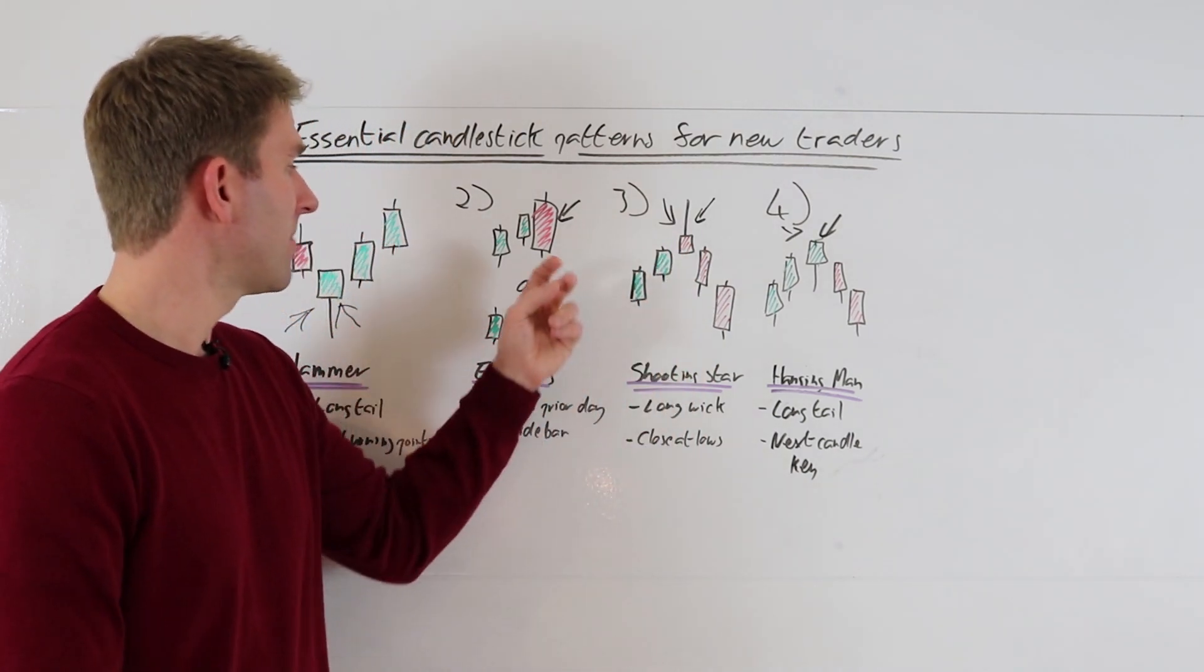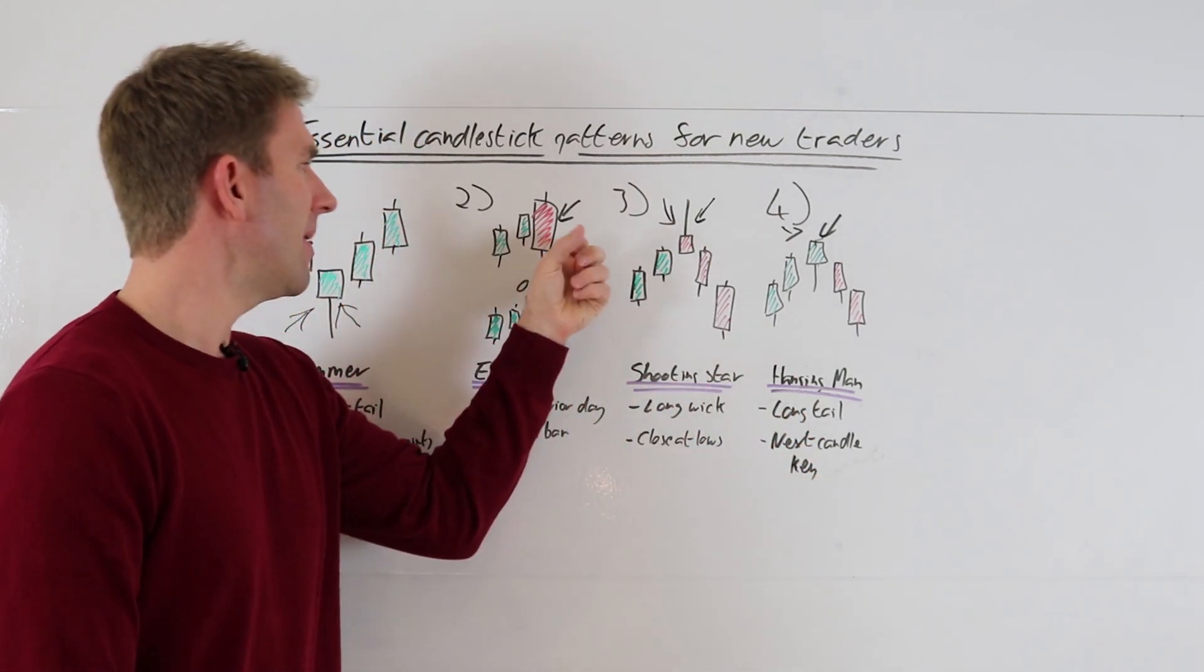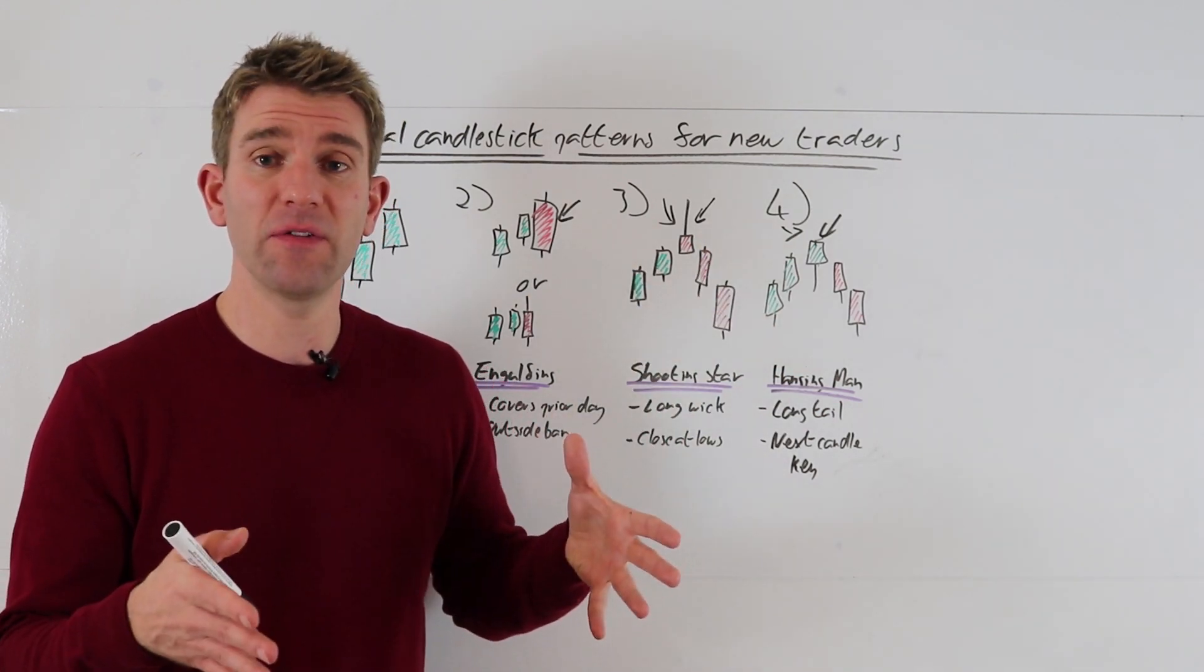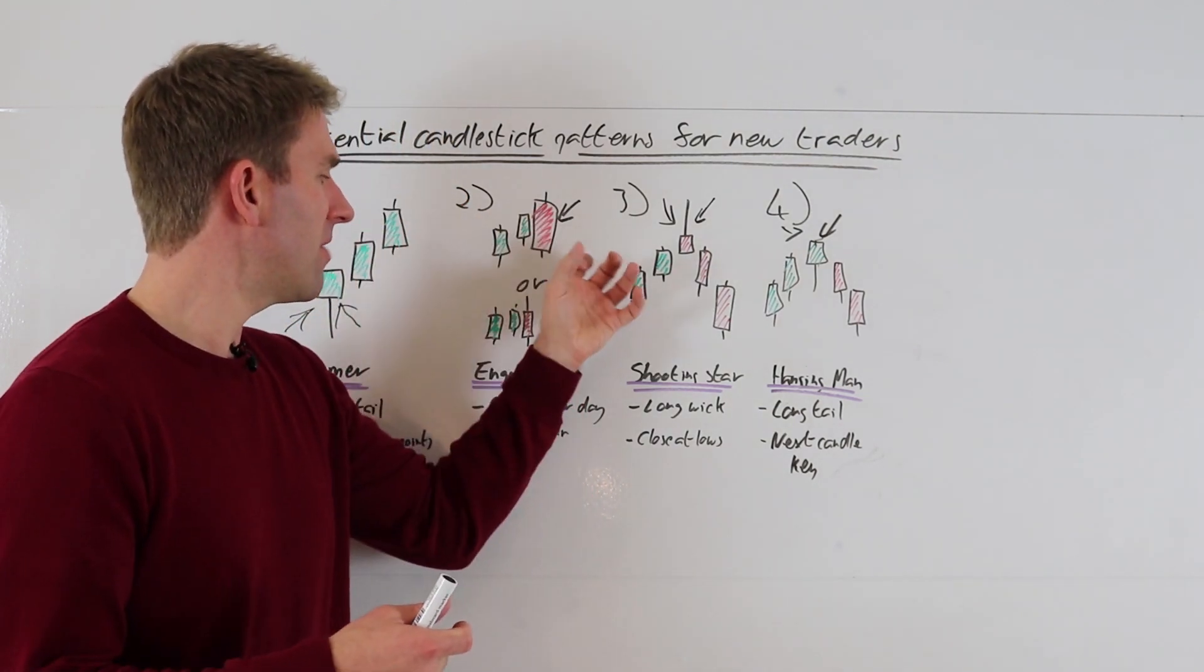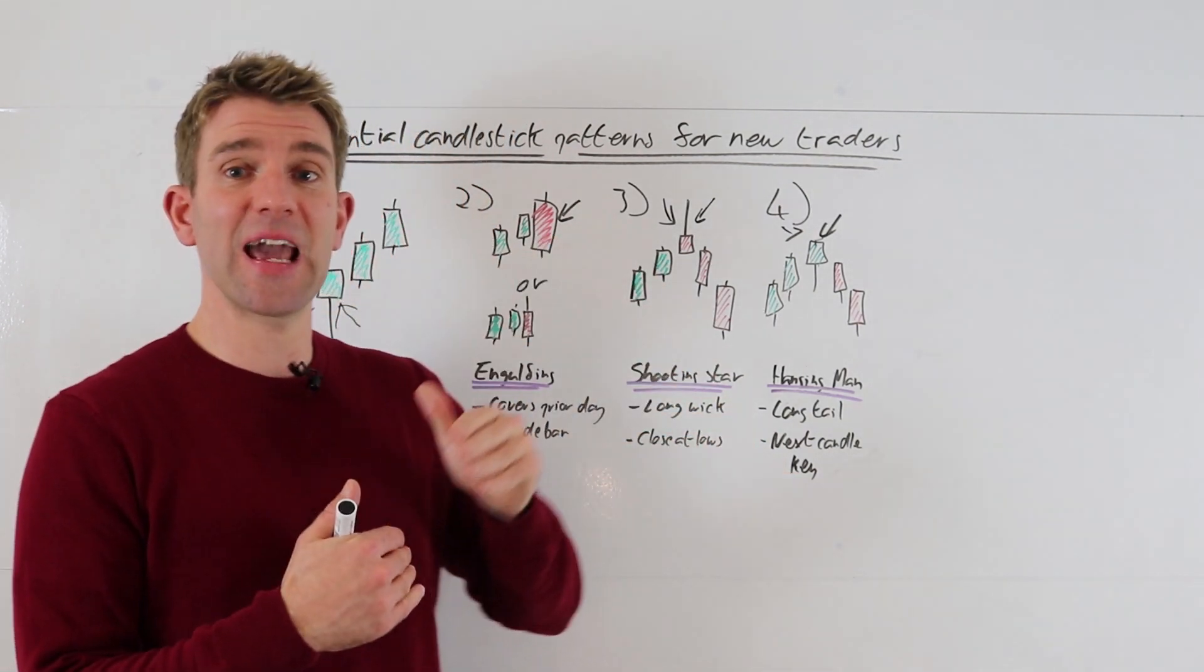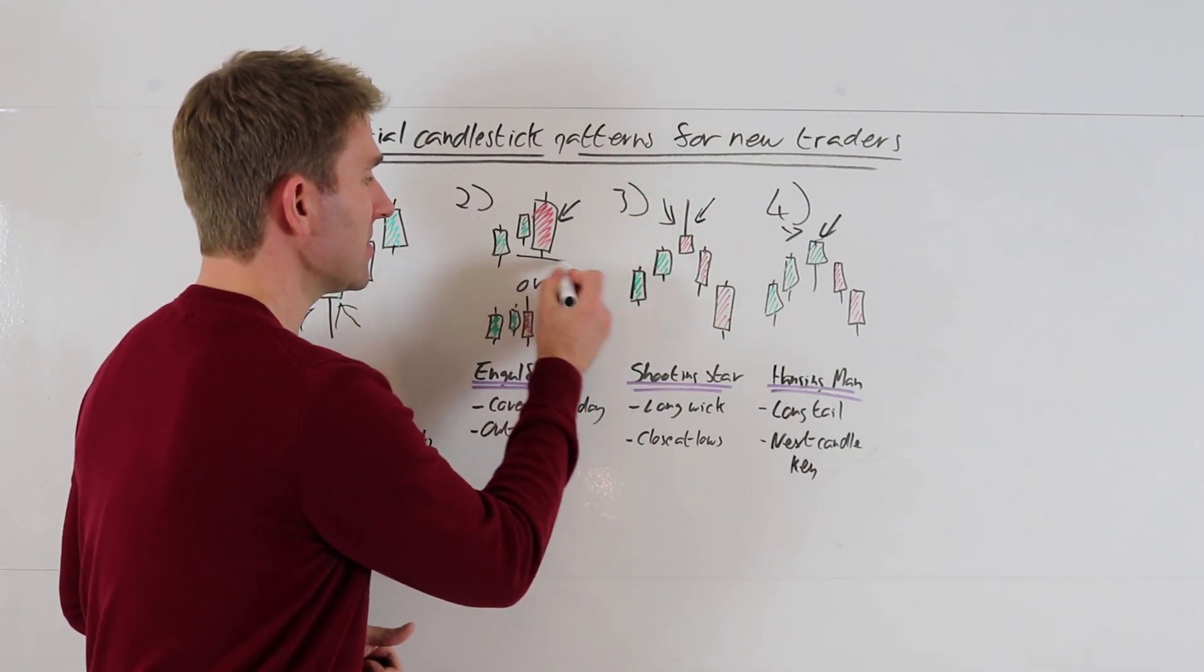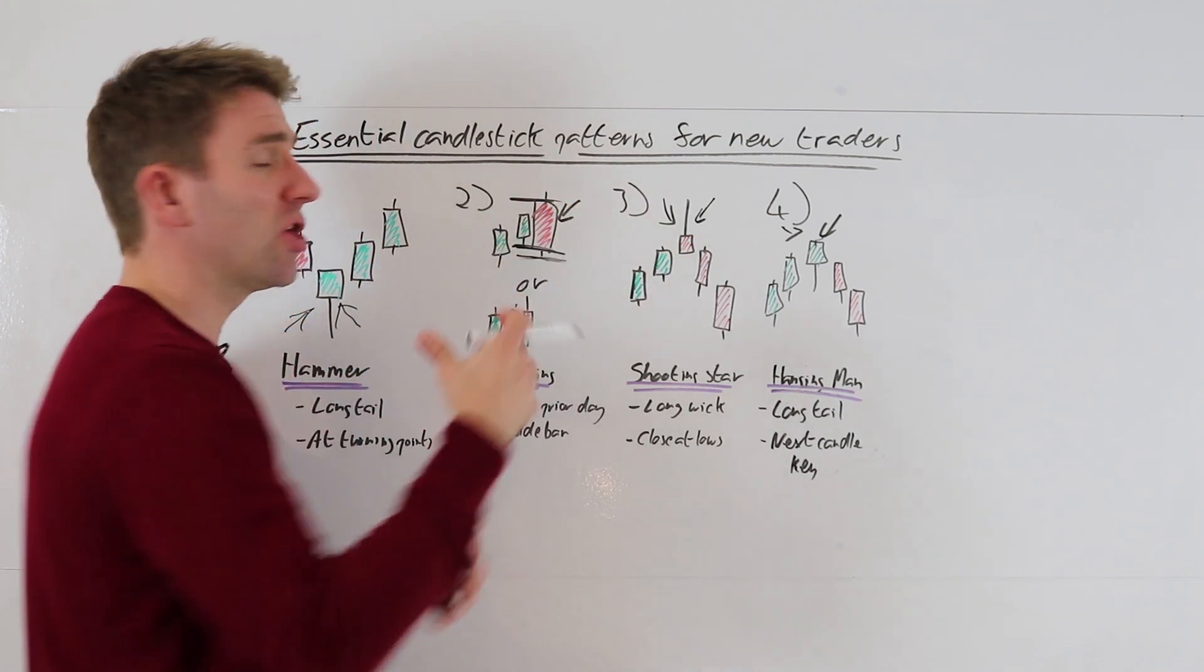Number two is the bearish engulfing or the outside bar or outside candle. Bearish engulfing you get really when the market is gapping, so that's going to be more for either maybe the weekend stuff on your forex, otherwise for stuff that's got a closing point like your stocks. So what does it actually mean? The bearish engulfing is why I've included the standard outside candle, because bearish engulfing traditionally means it's gapped up above the range, traded a little bit above, now it's come down and closed outside of the range as well.